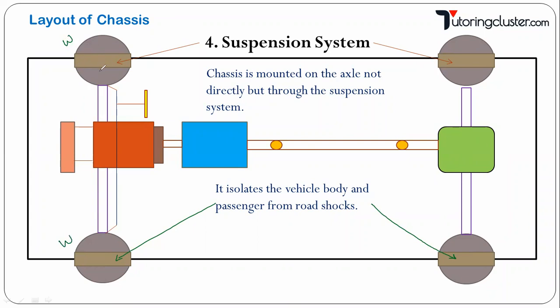On the front side you have the front suspension and on the rear you have the rear suspension. Please remember, from now onwards we are going to use the terms front axle, front suspension system, front wheels, and the corresponding names for the rear side. So this is the fourth part — the suspension system.